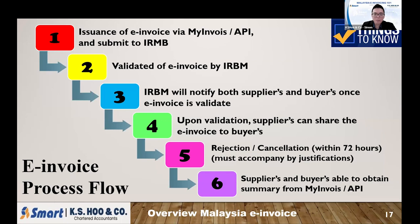You only have 72 hours from the time the invoice is validated by LHDN to amend or reject. If you want to cancel, you can cancel it yourself and re-issue a new invoice to your customer. After the e-invoice process is complete, both parties can get a summary from the MyInvoice portal or API side with a list of validated invoices. LHDN will keep all e-invoices under your company's MyInvoice portal, so if you ever lose a copy, you can find it there and provide it to your auditor or whoever requests it.